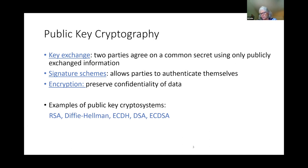NIST is currently running a five-year post-quantum cryptography competition, focused on choosing new key exchange primitives and new digital signature primitives. Key exchange is really just a protocol for two parties to agree upon a common secret using only publicly exchanged information. Signatures allow parties to authenticate themselves, and encryption allows you to preserve the confidentiality of data. The common public key cryptosystems in use around the world today are RSA, Diffie-Hellman, elliptic curve Diffie-Hellman, digital signatures (DSA), and elliptic curve DSA.